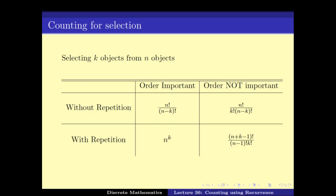There are two different cases to consider. Number one is whether repetition is allowed — in other words, can I pick the same object from the n objects multiple times? The second case is whether the order in which the elements are picked matters. This gives us four cases, and we have seen how to solve all four.